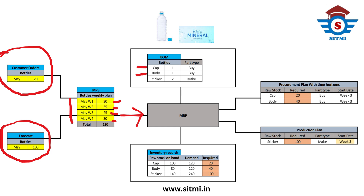MRP also takes input in the form of inventory records. The on-hand quantity for the cap is 100, on-hand quantity for the body is 80, and on-hand quantity for the sticker is 140. Since we have to manufacture 120 bottles, we will need 120 caps, 120 body, and 240 stickers because each bottle needs two stickers.